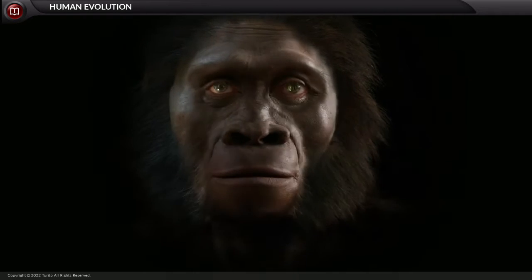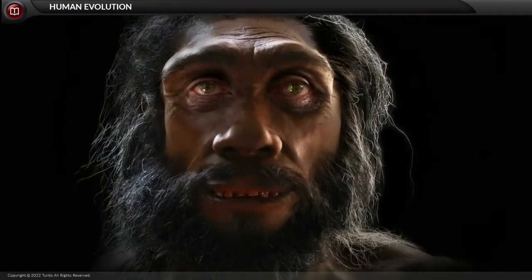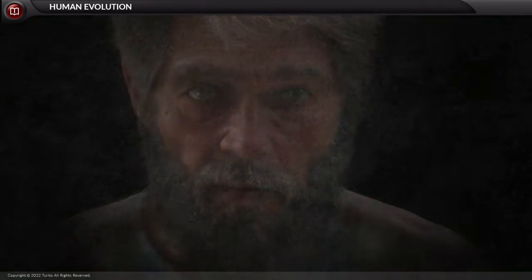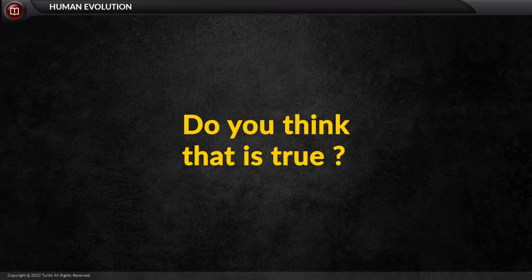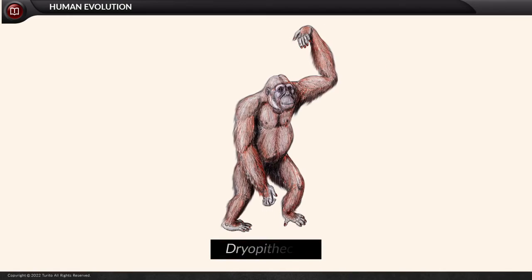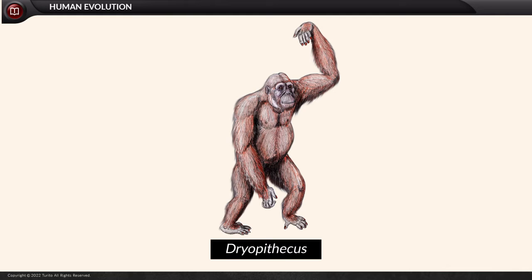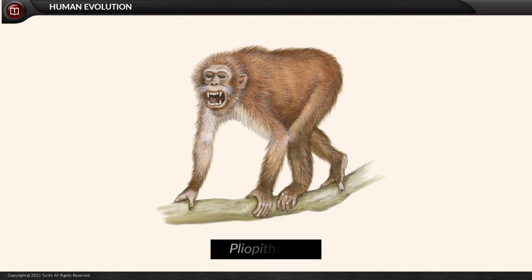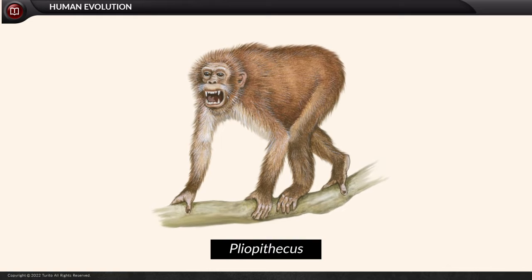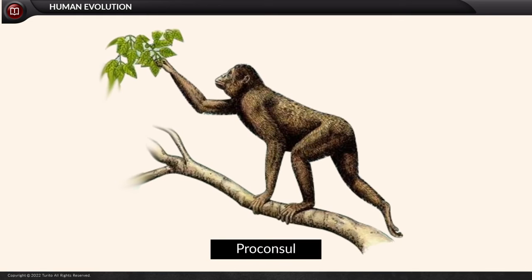It is always believed that humans evolved from apes or monkeys — but that is not true. It is important to remember that there is a common ancestor, which is Dryopithecus. To understand the map laid down for human evolution, we should know that the beginning is from Pliopithecus. Then evolved Proconsul, and later comes the common ancestor Dryopithecus.